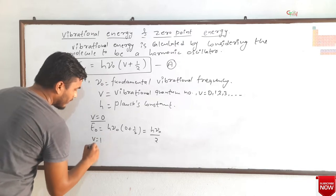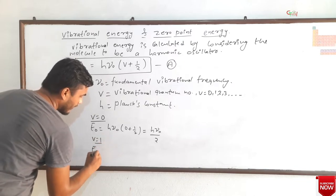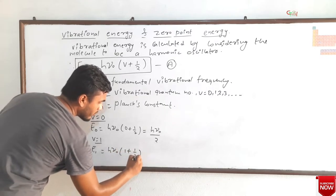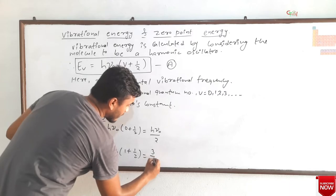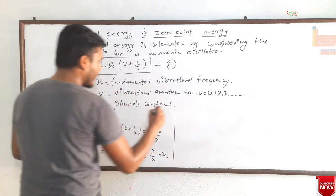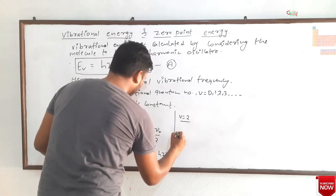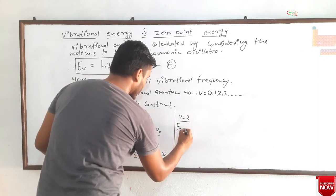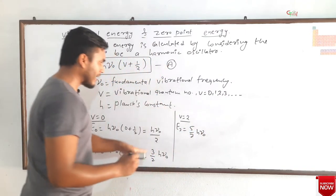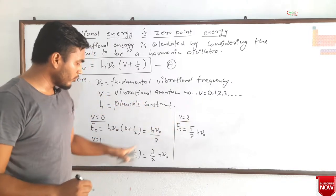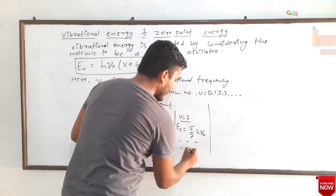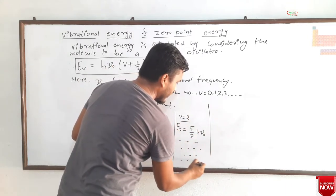If V = 1, then E₁ = hν₀(1 + 1/2) = (3/2)hν₀. If V = 2, then E₂ = (5/2)hν₀. You can easily calculate by putting the value of V into the formula. This value keeps on increasing as we increase the value of V.